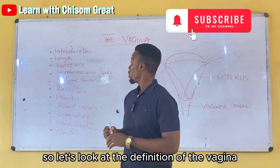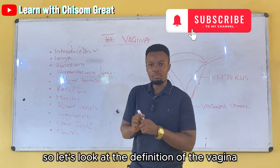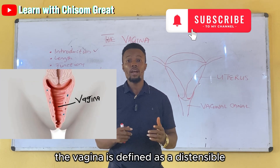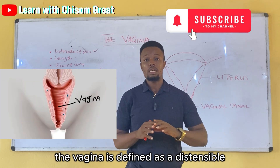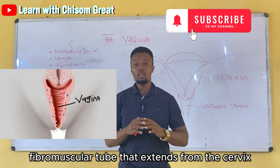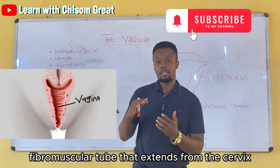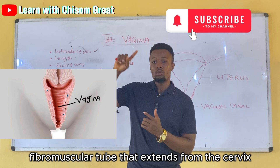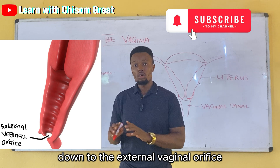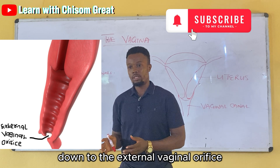The vagina is defined as a distensible fibromuscular tube that extends from the cervix down to the external vaginal orifice.